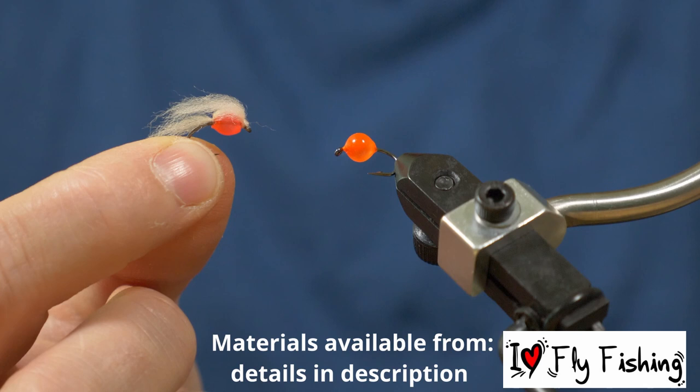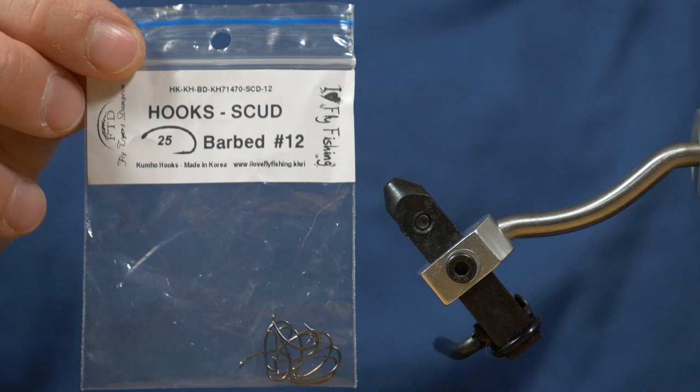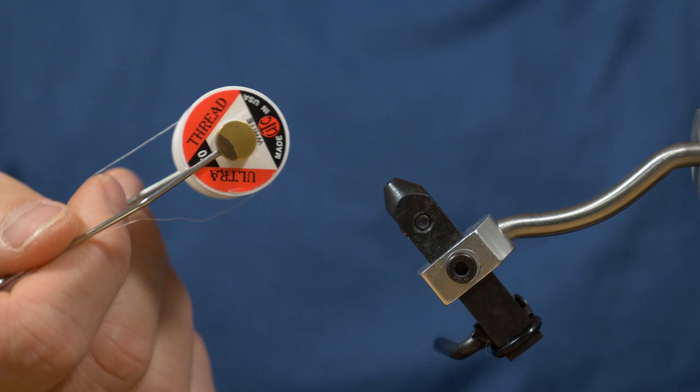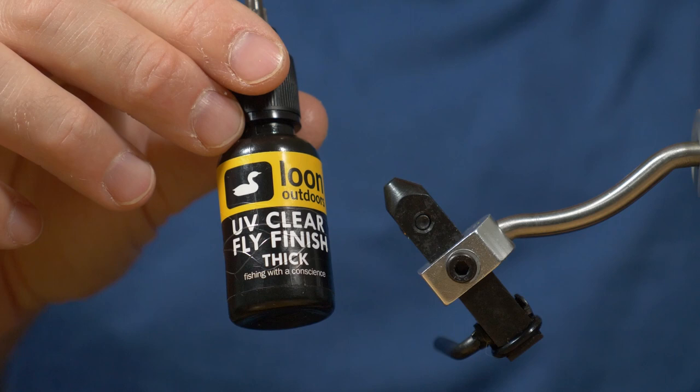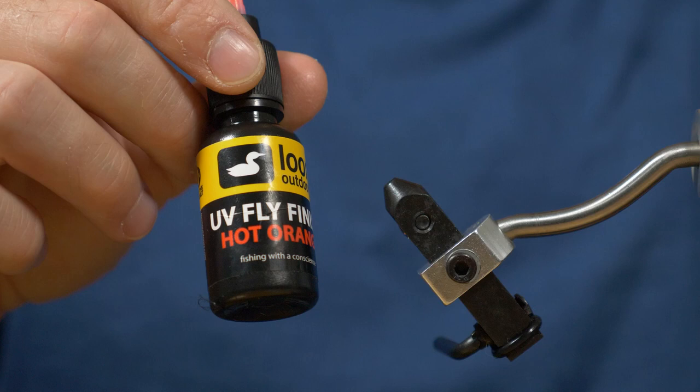We'll be tying this fly on size 12 barbed Kumo hooks available from I Love Fly Fishing. We'll be using some white thread in this instance, but thread color doesn't really matter. Some Loon UV clear fly finish in the thick variety, and the secret ingredient, some Loon UV fly finish in hot orange. But there's 16 colors in this range so you can make this fly any color you want.